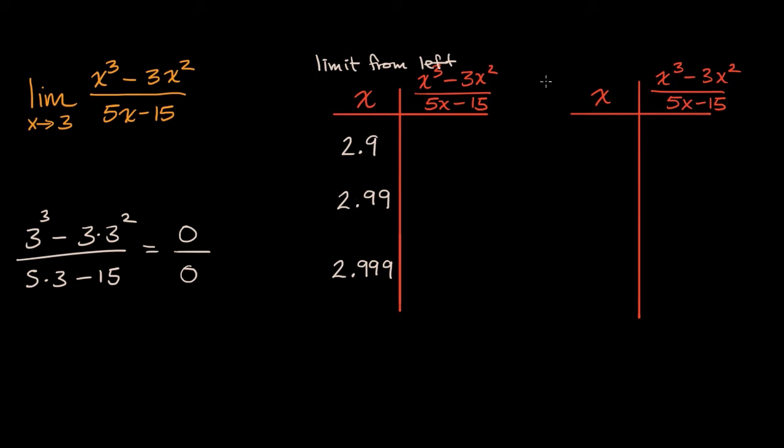But we also, in order for the limit to exist, we have to be approaching the same thing from both sides, from both the left and the right. So we could also try to approximate the limit from the right. And so what values would those be? Well, those would be x values larger than three. So we could say 3.1, but then we might want to get a little bit closer. We could go 3.01. But then we might want to get even closer to three. 3.001.